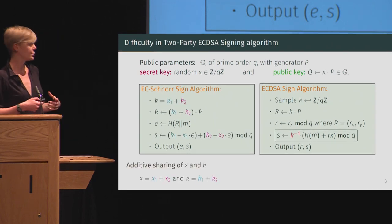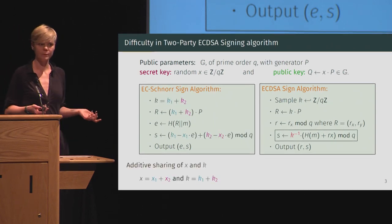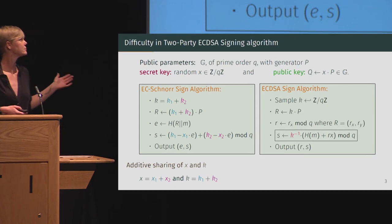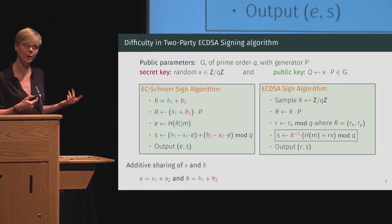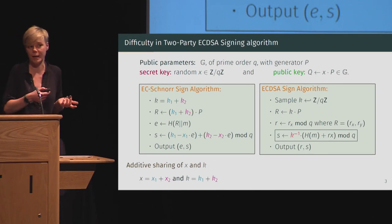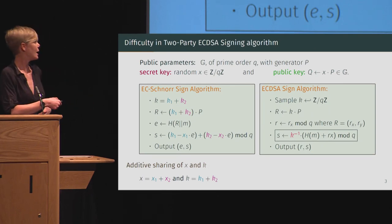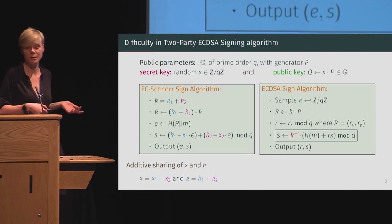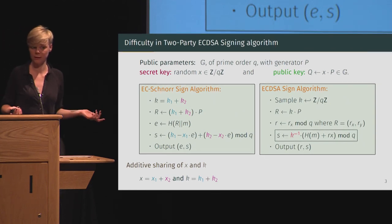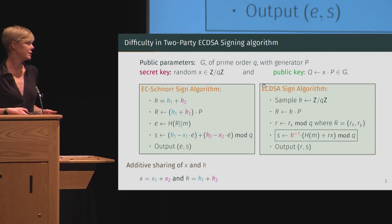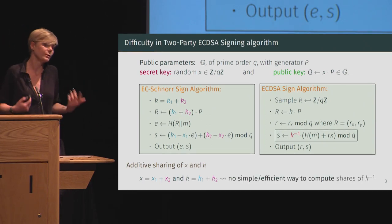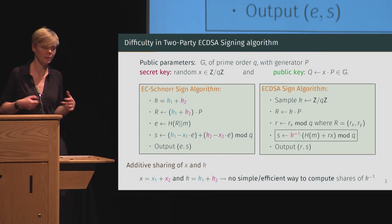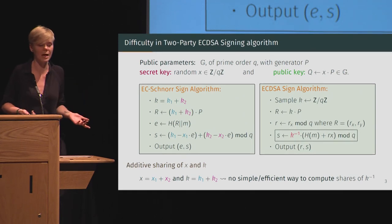If we wanted to just additively share X and K, for Schnorr everything works fine — each party can sample a share of X and a share of K, and they can each compute a share of the signature which they just add up to get the overall signature. On the other hand, for eCDSA, it's really unclear how we can efficiently compute K inverse from additive shares of K.